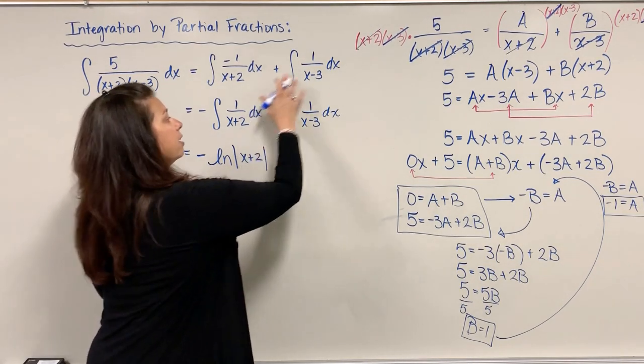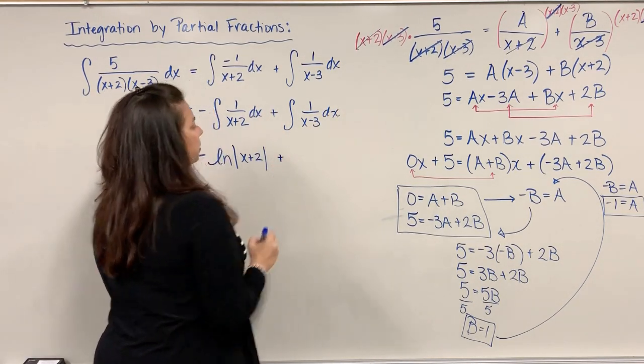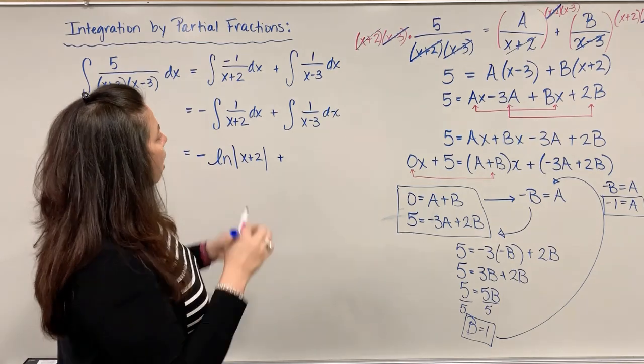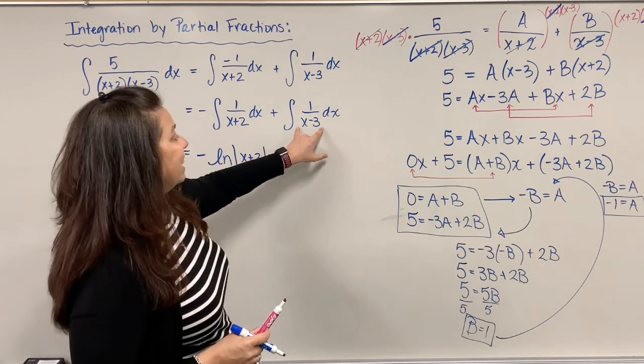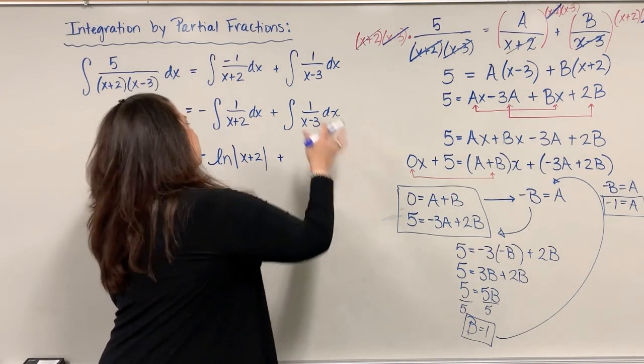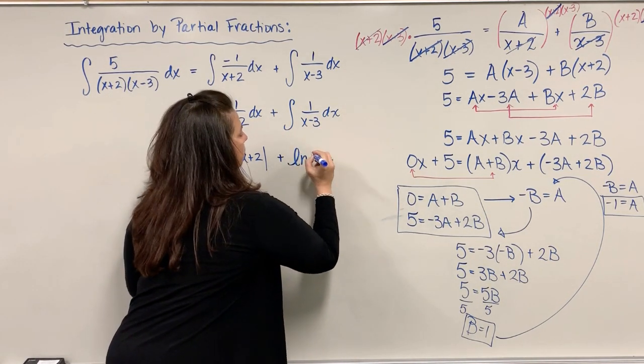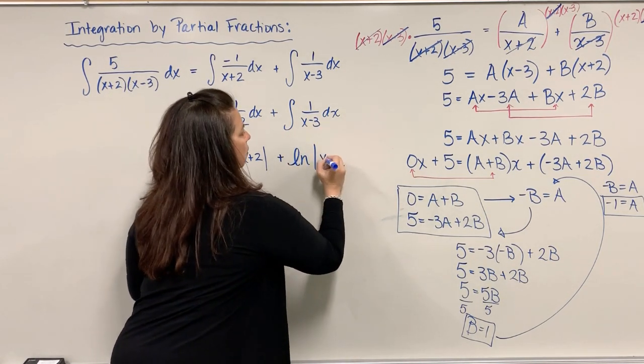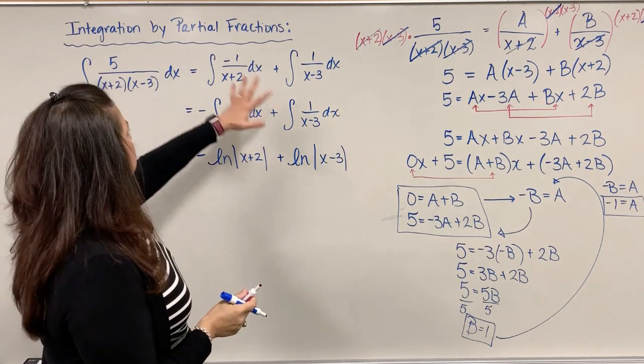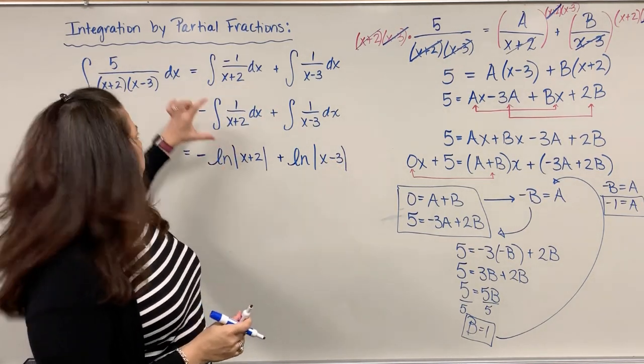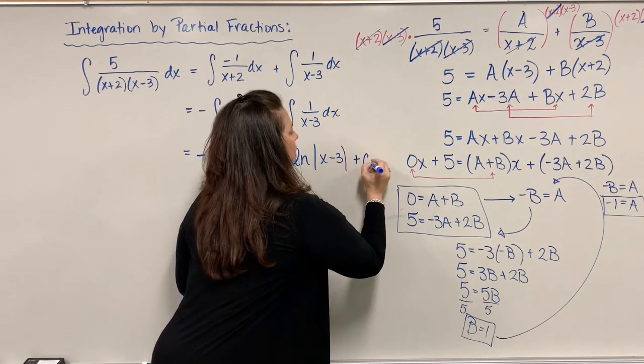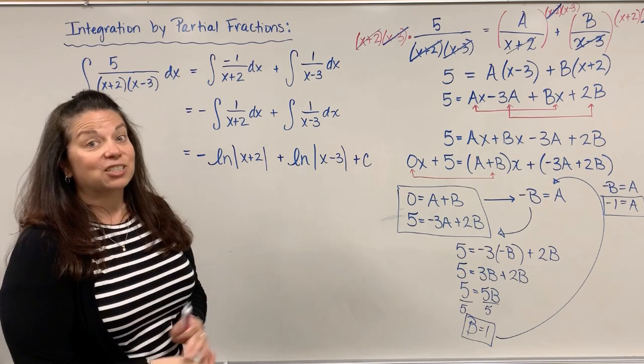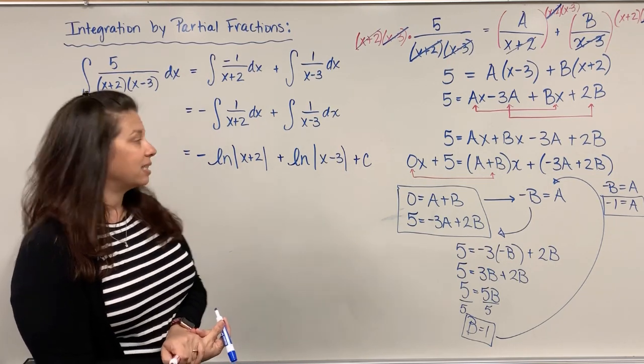This next piece, I have plus, same setup. I've got 1 over x-3. That x-3 is a linear factor again. Find its integral, just the natural log of the absolute value of x-3. And because this was an indefinite integral, I need to say plus c there on the end.